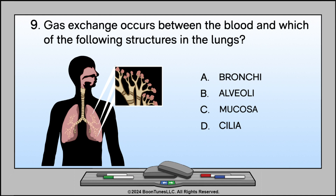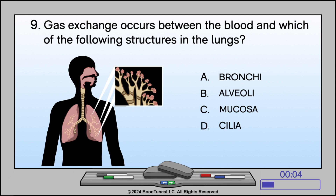Gas exchange occurs between the blood and which of the following structures in the lungs? A. Bronchi. B. Alveoli. C. Mucosa. D. Cilia. The answer is B. Alveoli.